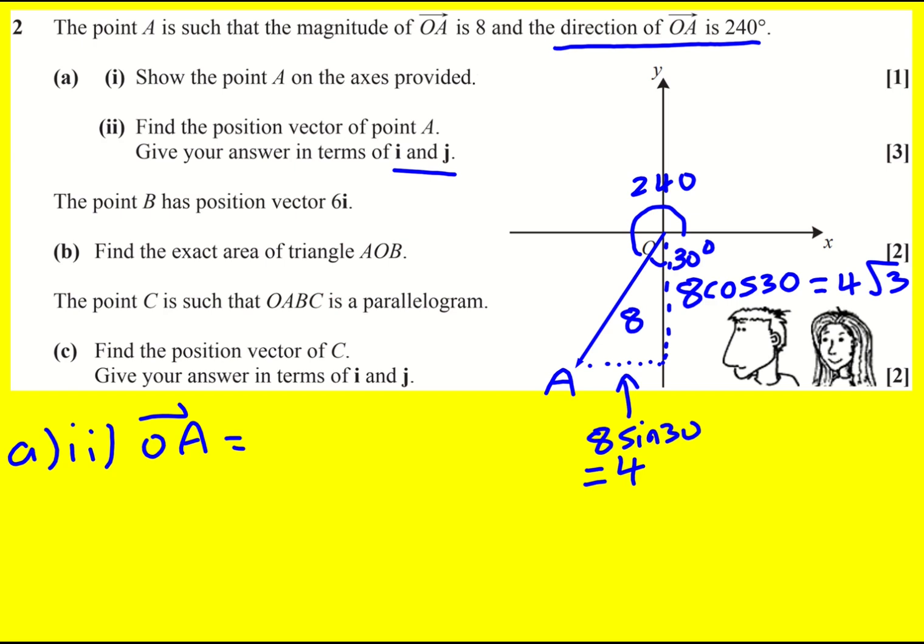That's all I need - I just have to realize the triangle dimensions are 4 and 4 root 3. But because I'm dealing with a vector, I need to incorporate direction, so it's going to be minus 4i and minus 4 root 3 j.